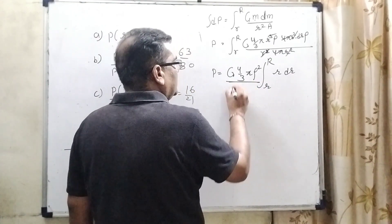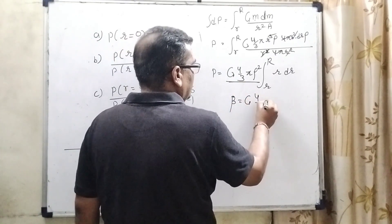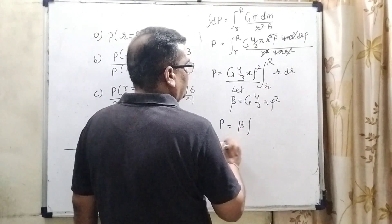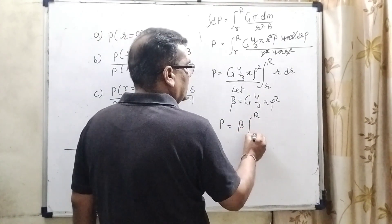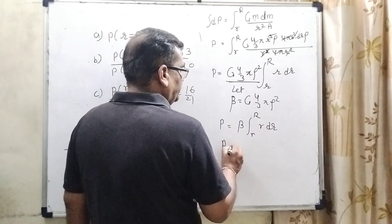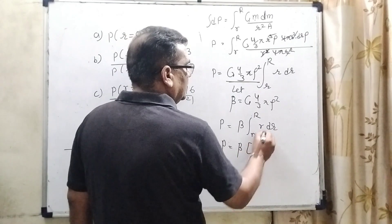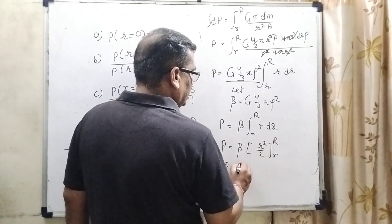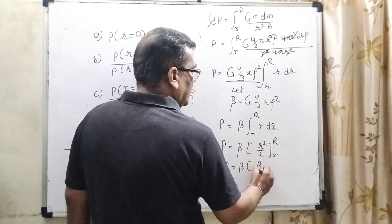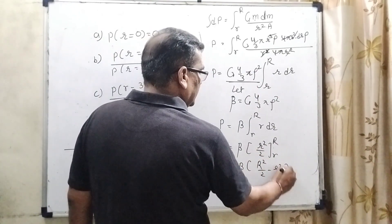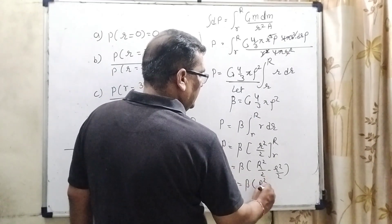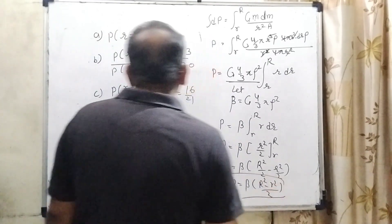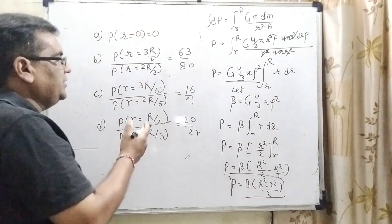So therefore P equals beta into integration, capital R is the upper limit, small r is lower limit, r dr. Now integrate this r dr then it becomes r square upon 2. Then P equals beta, upper limit r square by 2 minus lower limit. Now it can be written as P equals beta, capital R square minus small r square by 2. This is the value and we have to substitute according to the conditions one by one and check the values.